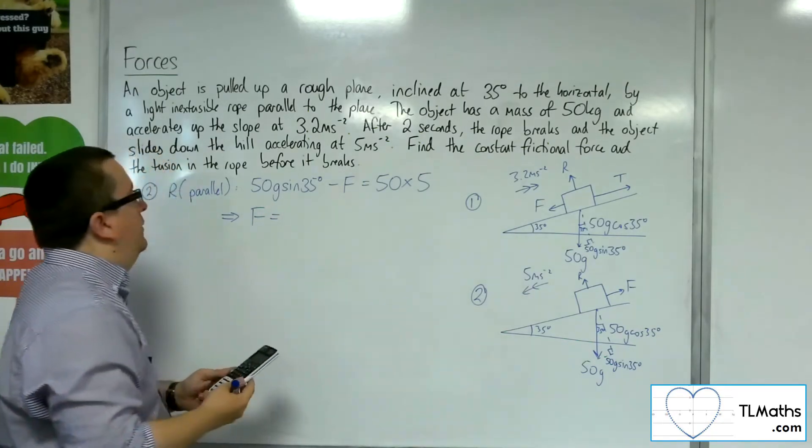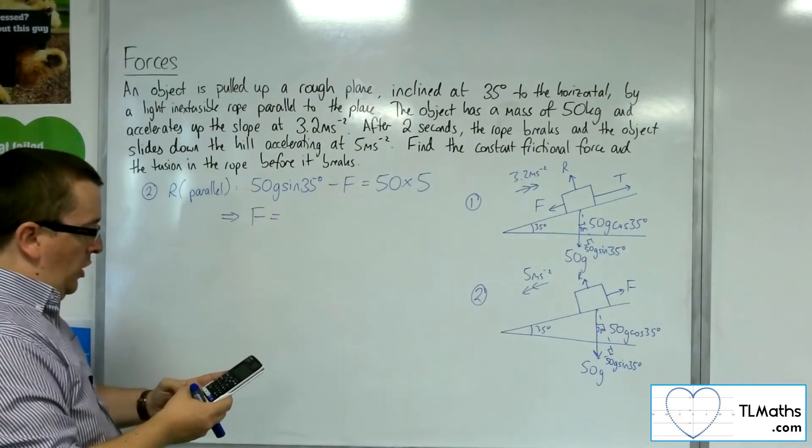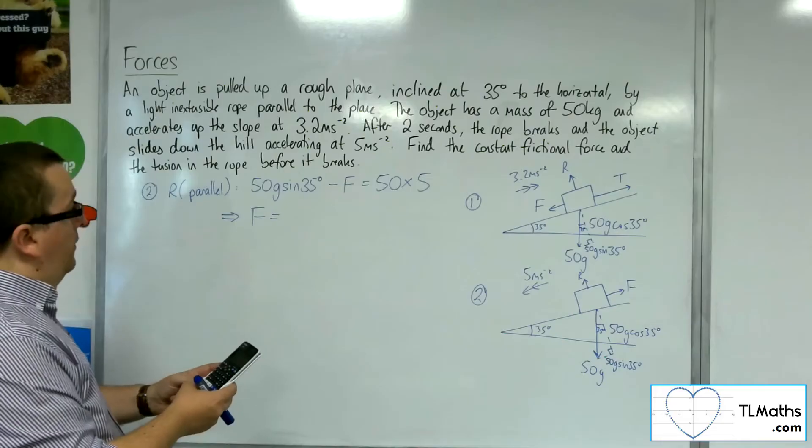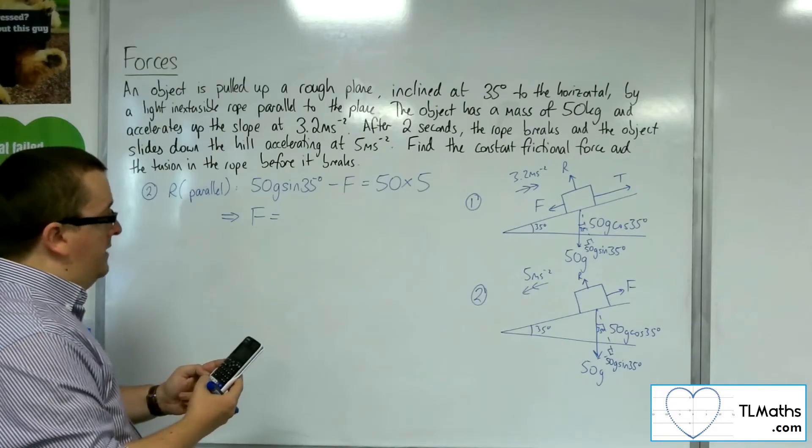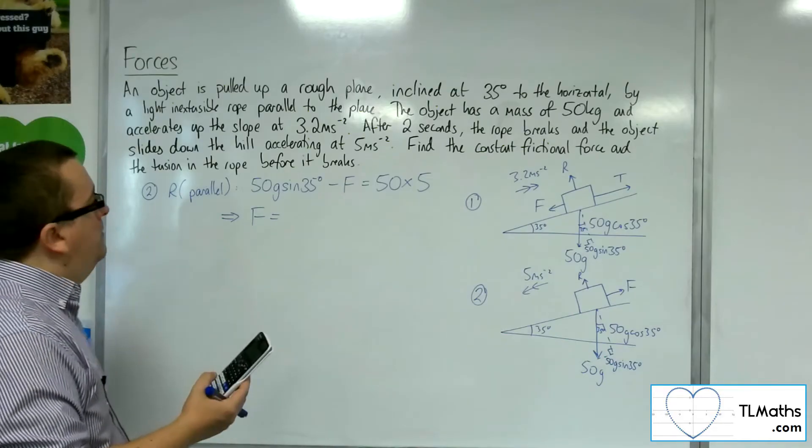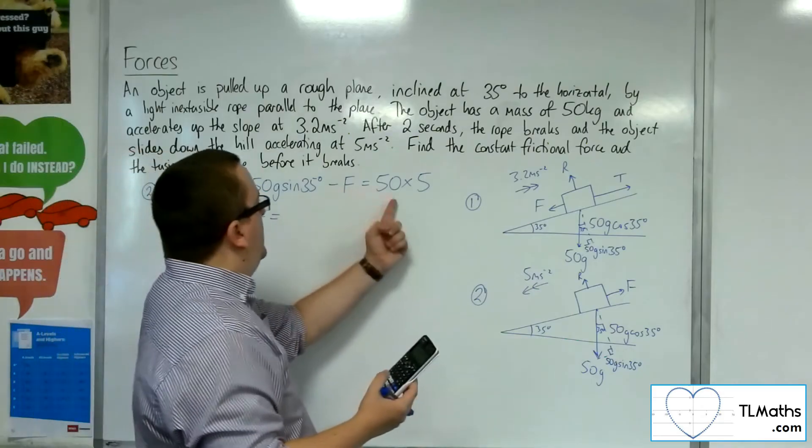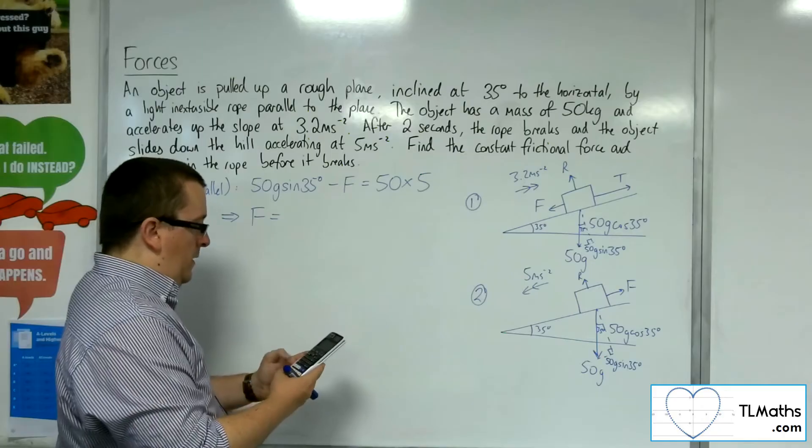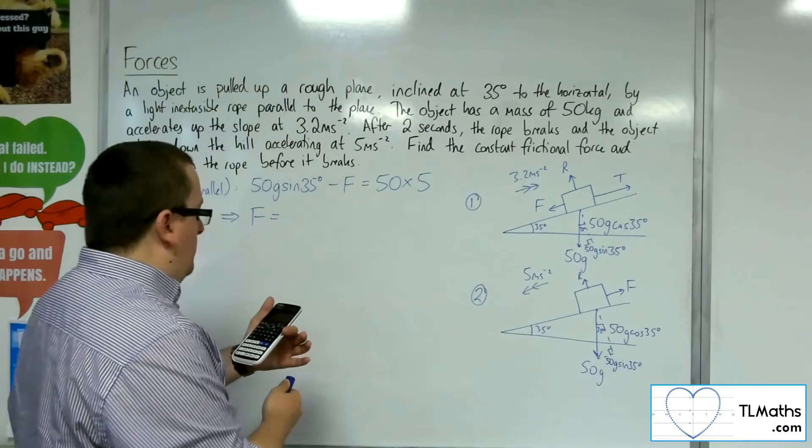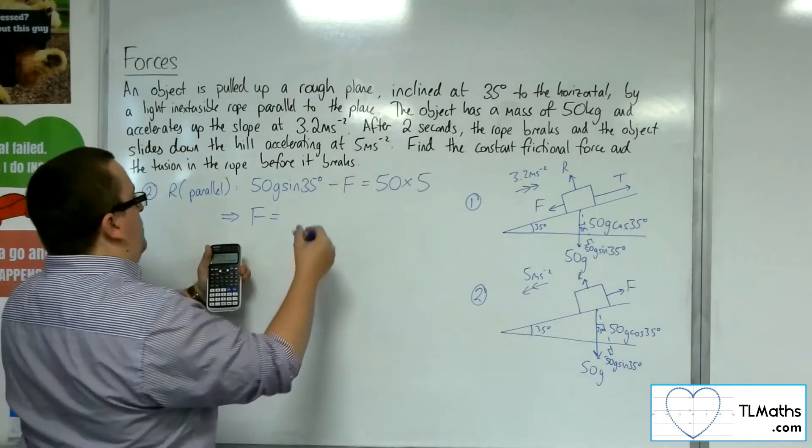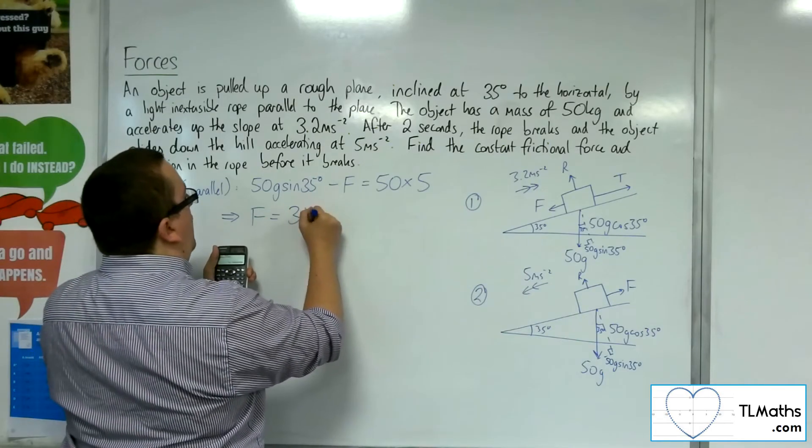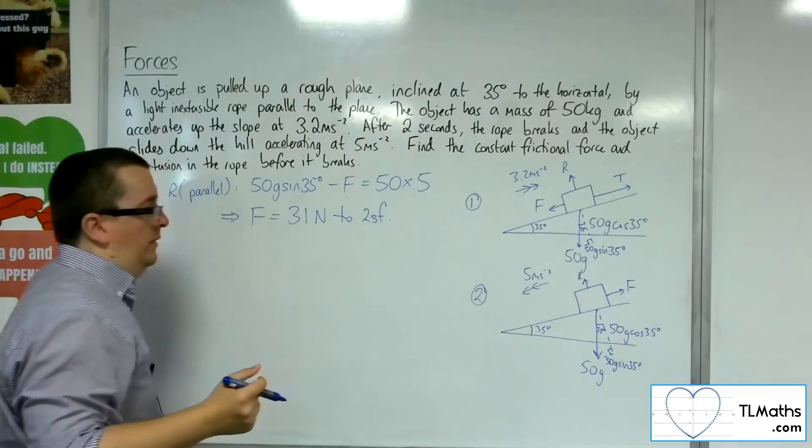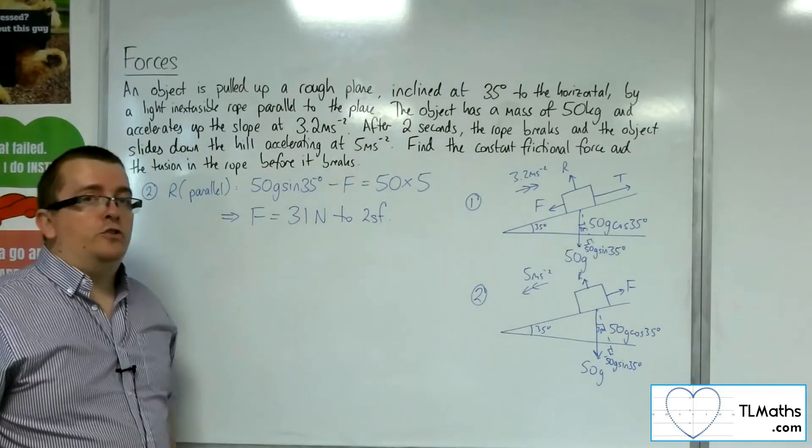I've got 50, I'm going to take g as 9.8, so 50 times 9.8 times sine of 35 degrees. That's 281. I'm going to take away 50 times 5, and that gets me 31.0524. So the frictional force is 31 newtons to two significant figures.